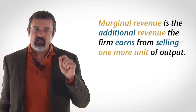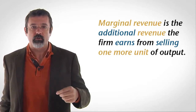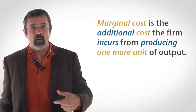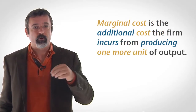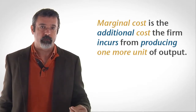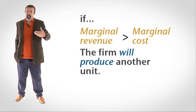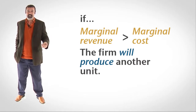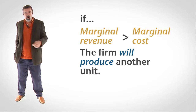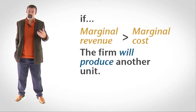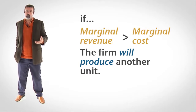Recall why this is so. Marginal revenue is the additional revenue the firm earns from selling one more unit of output. Marginal cost is the additional cost the firm incurs from producing one more unit of output. If marginal revenue is greater than marginal cost, then the extra revenue the firm earns from selling another unit exceeds the extra cost of producing that unit. So if the firm produces and sells one more unit, its profit will increase.